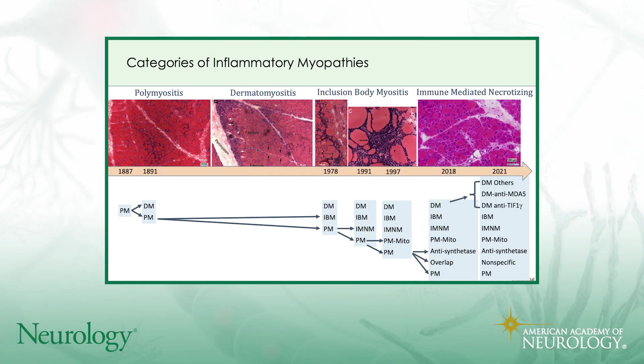This is an overview of the inflammatory myopathies, which is quite helpful historically, and there are several major categories outlined here. But if we look at the evolution of this field going back into the 1800s, initially there was really one category called polymyositis.